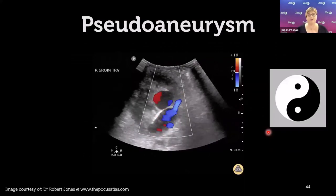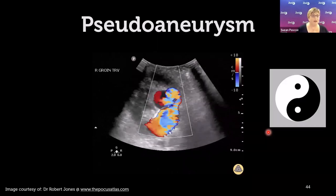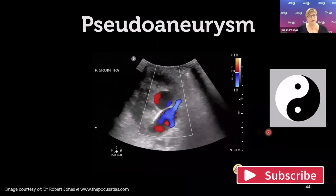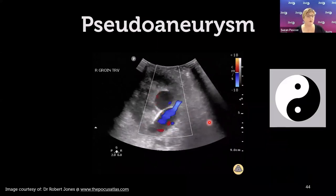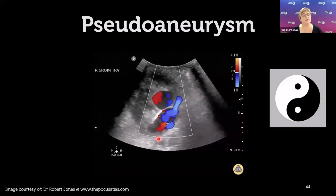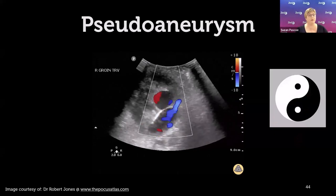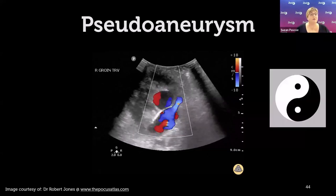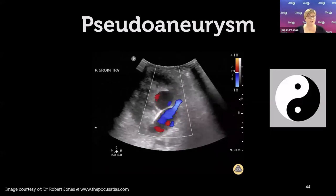Pseudoaneurysms are the last false-positive cause to consider. A good clinical history is critical — if the patient has had an angiogram, look for a pseudoaneurysm. On colour Doppler, pseudoaneurysms show the classic yin-yang sign with red and blue bidirectional flow. Try to identify the feeding channel from the artery. Applying pressure can test compressibility and may stop blood flow.